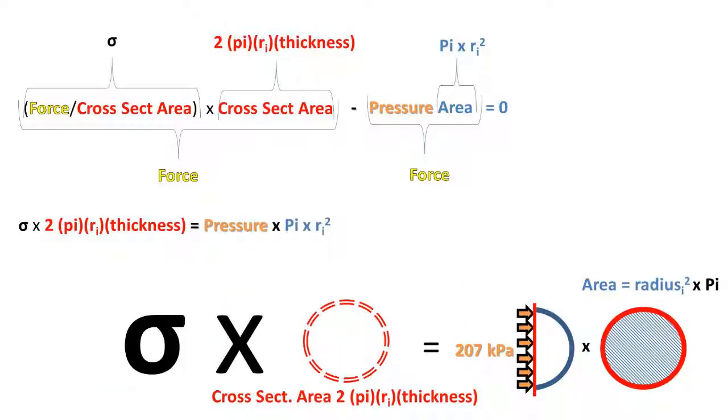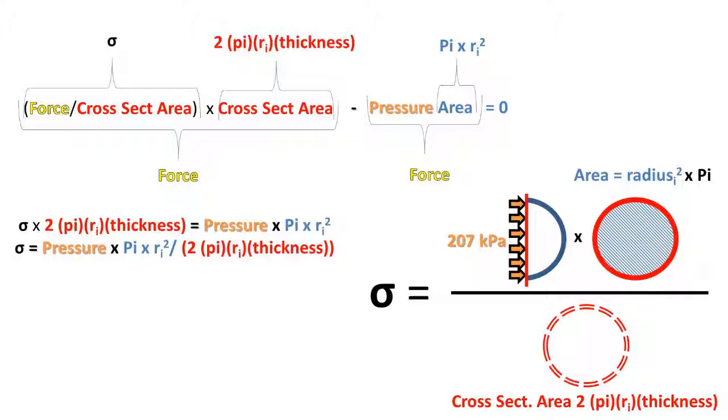Now we will do some rearranging of formulas. First, we will add the pressure times the area to both sides of the equation. Then we will divide both sides by the cross-sectional area of 2 times pi times the inside radius times the thickness.